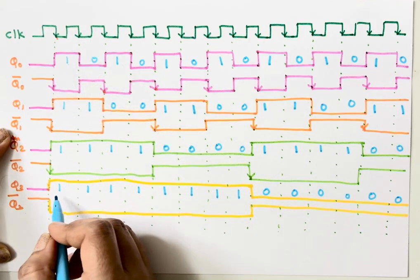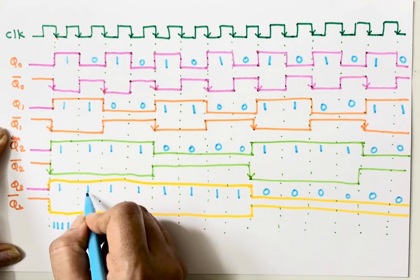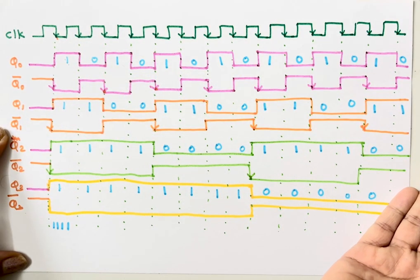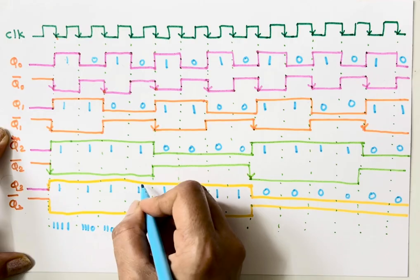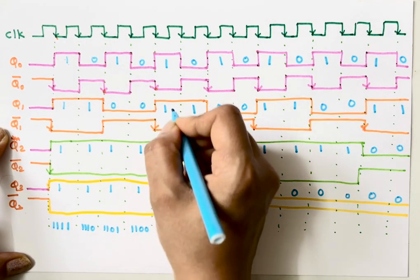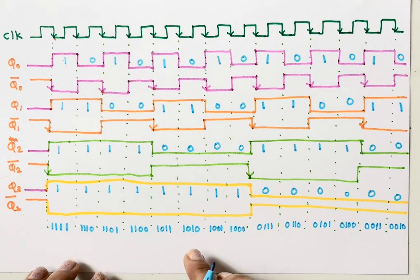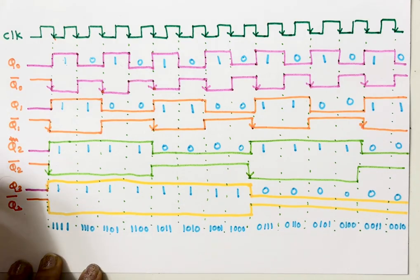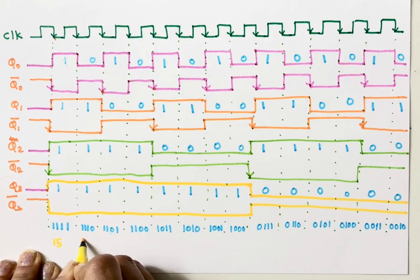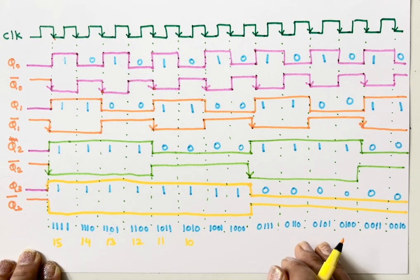Our outputs are Q0 (LSB), Q1, Q2, and Q3 (MSB). Reading the count sequence: the counter starts at 1111 which is 15, then 1110 which is 14, then 1101 which is 13, then 1100 which is 12, then 1011 which is 11, then 1010 which is 10, then 1001 which is 9, and so on down to 0010 (2), then 0001 (1), then 0000 (0). This is the timing diagram for the four-bit asynchronous down counter.